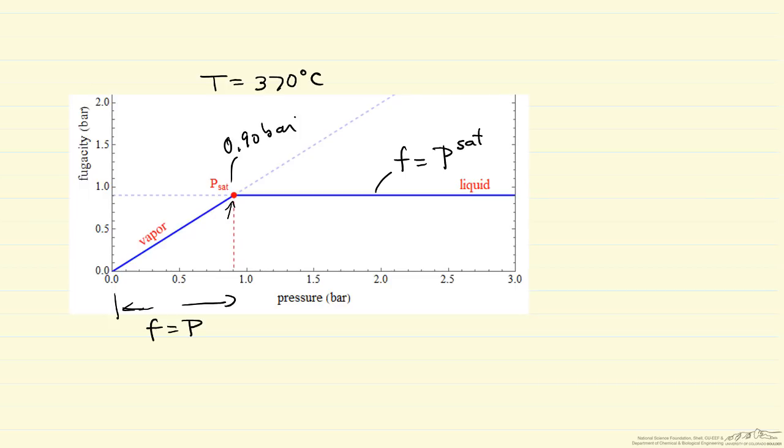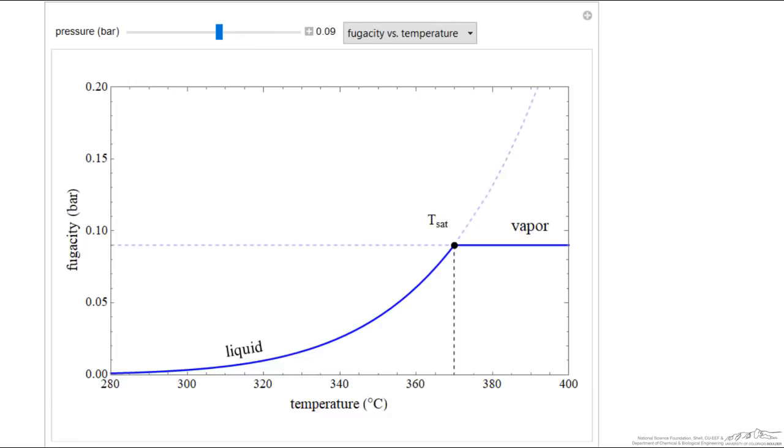And then we can look at the interactive simulation that was used to make these figures to see how, for example, this figure changes as we change the temperature. So here we're looking at the interactive simulation, and we can change the pressure. So we're looking at one pressure, fugacity versus temperature. If I increase the pressure, then of course it takes a higher temperature before we form a vapor phase.